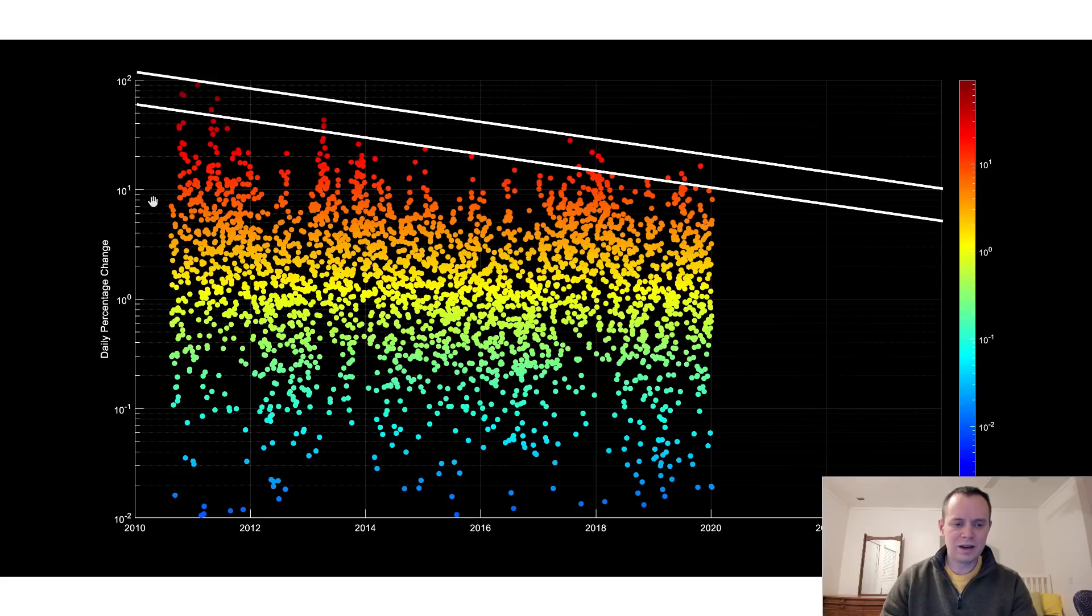And here, you can see that most everything for Bitcoin falls between plus or minus 10%. Basically between this horizontal line at 10 to the 1, and then a line at 10 to the negative 1. So most everything falls within this window.